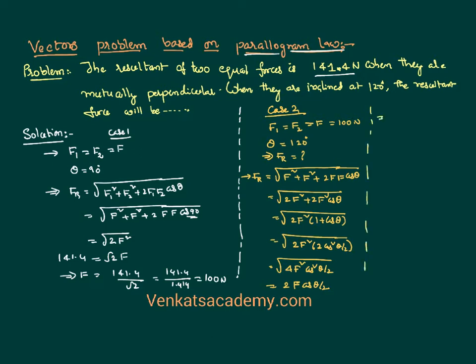That implies F resultant is 2 times—we have calculated each F is 100—cos(120°/2), so 200·cos(60°). We know cos(60°) is equal to half, so the answer is equal to 100 newtons.